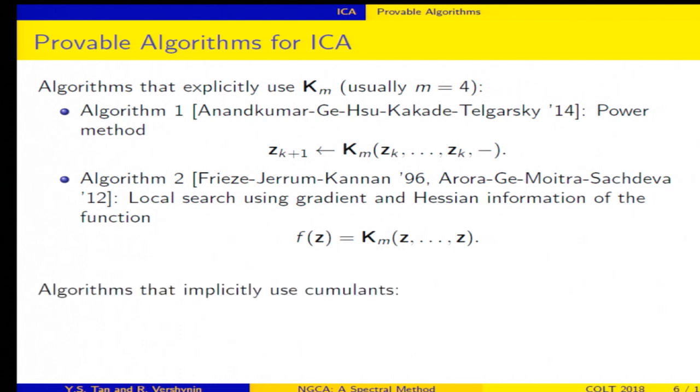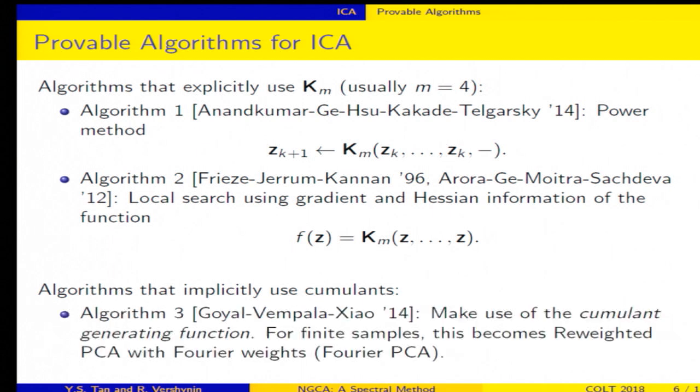And then we also have algorithms that implicitly use KM. Alright, so here's an algorithm by Goyal and Vempala, and the idea is to make use of the cumulant-generating function, the CGF, which is defined by the log of the characteristic function. Okay, so for finite samples, this algorithm turns out to be simply reweighted PCA. And so you sum up the outer products of the observed random vectors XI, and you multiply each of these terms with a weight. And for this algorithm, we use Fourier weights.